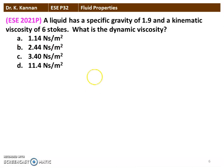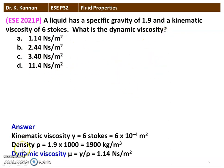Next question from the 2021 question paper: A liquid has a specific gravity of 1.9 and kinematic viscosity of 6 stokes. What is the dynamic viscosity? The kinematic viscosity is 6 stokes, which is 6 × 10⁻⁴ m²/s, and density is 1.9 × 1000 = 1900 kg/m³. Dynamic viscosity μ = kinematic viscosity × density, which equals 1.14 Newton-second per meter square.